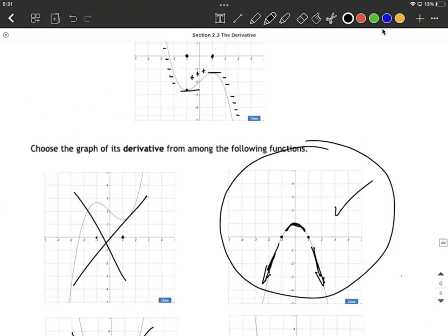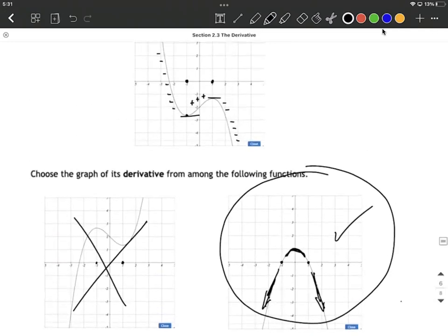It satisfies everything we wanted it to, corresponding with our increasing and decreasing intervals, as well as the x-intercepts where our horizontal tangent lines have a slope of zero. Hope this helps out on these multiple choice matching problems, connecting the original function and the derivative's graph.